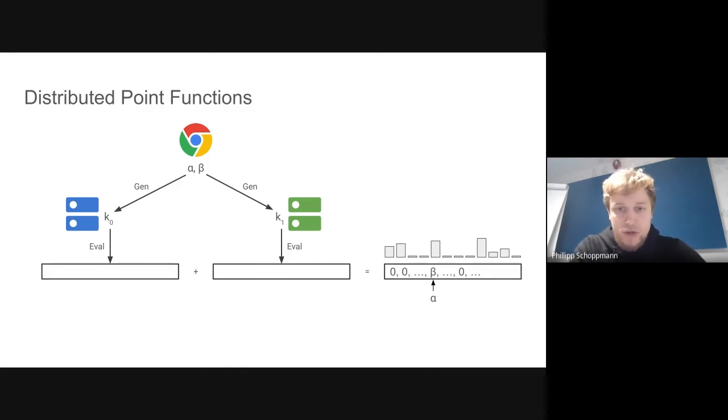What is crucial here is that neither the keys k0 and k1 nor the expansion reveal anything about alpha and beta. Only after combining the expansion do you know what the one-hot vector was.